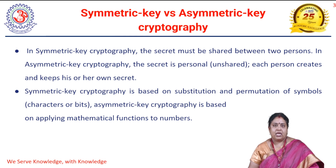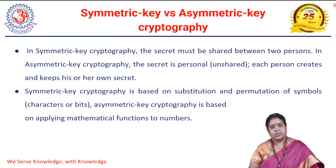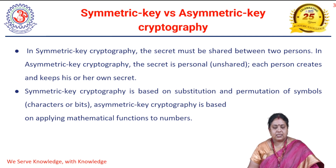In symmetric key cryptography, the secret must be shared between the two persons. Only one key is used for encryption as well as decryption — the same key is used for both the encryption process and the decryption process. This key must be shared between the two persons only, meaning whoever wants to communicate must have this private key, or we can call it the secret key.